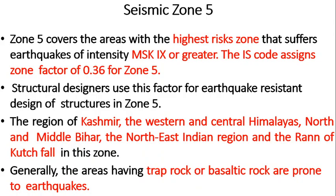Zone 5 is measured under MSK scale 9 or greater, showing the highest risk zone, with IS code assigning a zone factor of 0.36 for structural design. Kashmir, western and central Himalayas, northern and middle Bihar, northeastern India, and Rann of Kutch fall in this zone. These areas generally have basaltic rock or trap rock formed due to plate collisions. Regions with high quantities of basaltic rock may have fault lines representing earthquake zones.